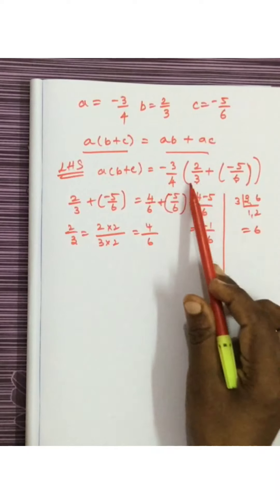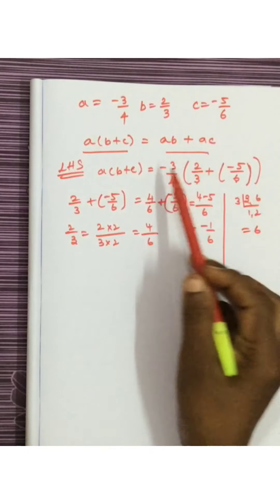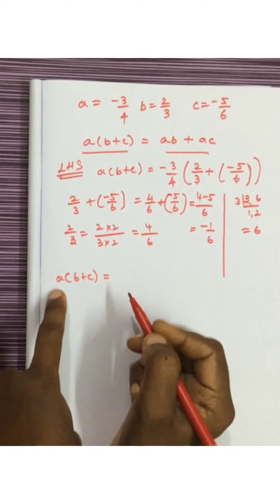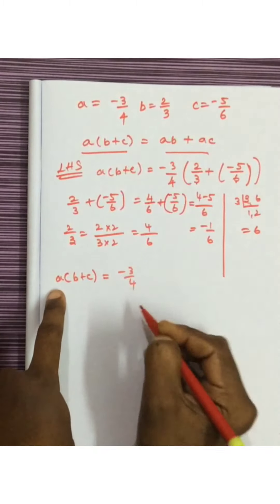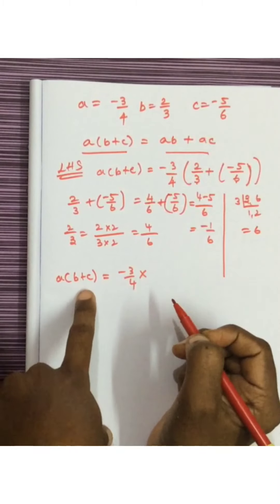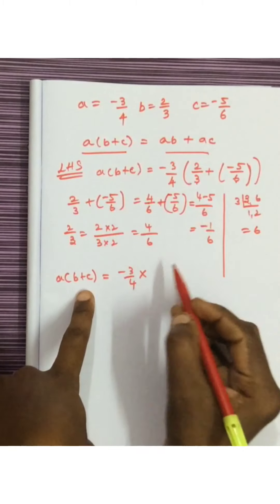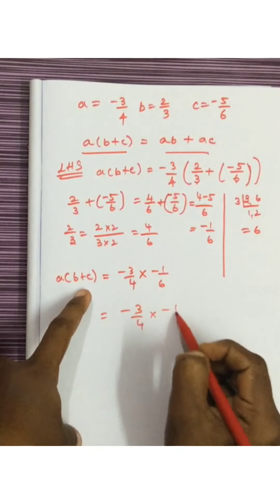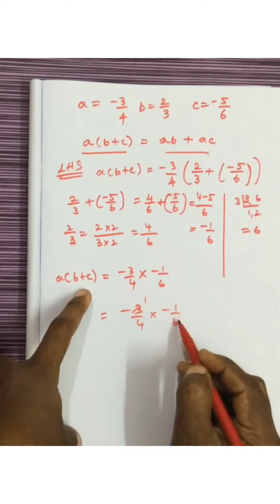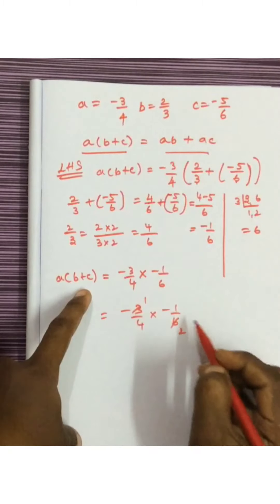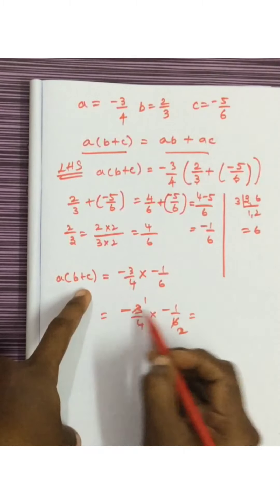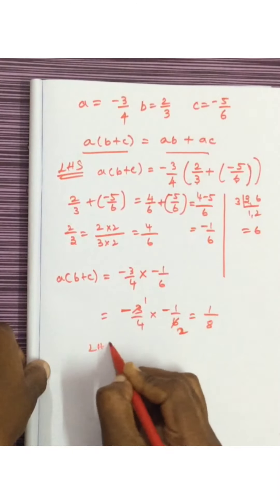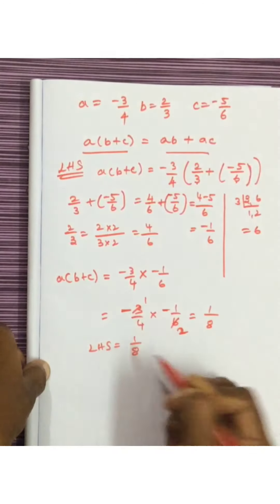This minus 1 by 6 we now have to multiply by minus 3 by 4. So A into B plus C equals A which is minus 3 by 4, multiplied by B plus C which is minus 1 by 6. So minus 3 by 4 multiplied by minus 1 by 6: minus into minus becomes plus, 1 ones are 1, 3 twos are 6, giving 1 by 8. So the left hand side answer is 1 by 8.